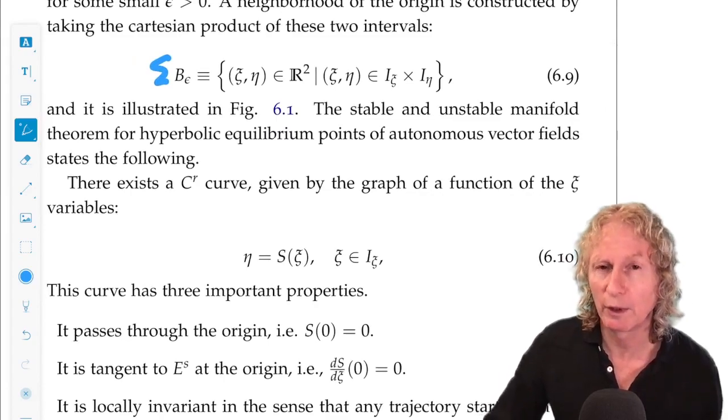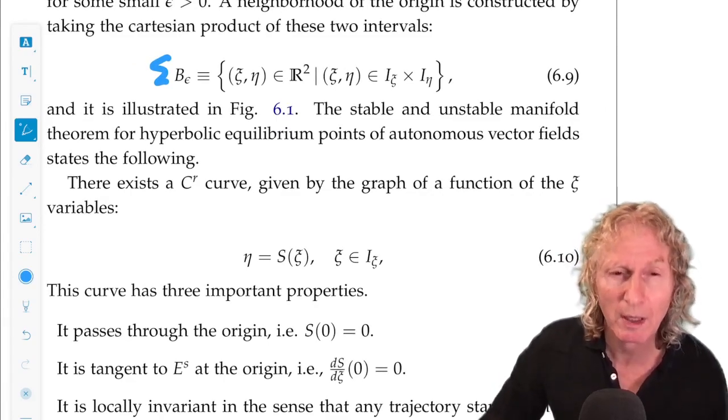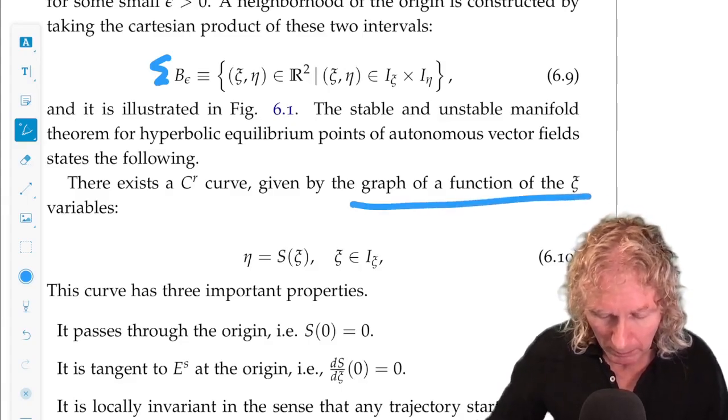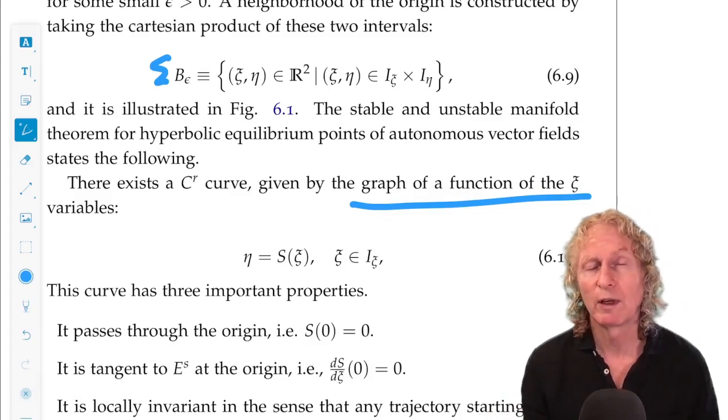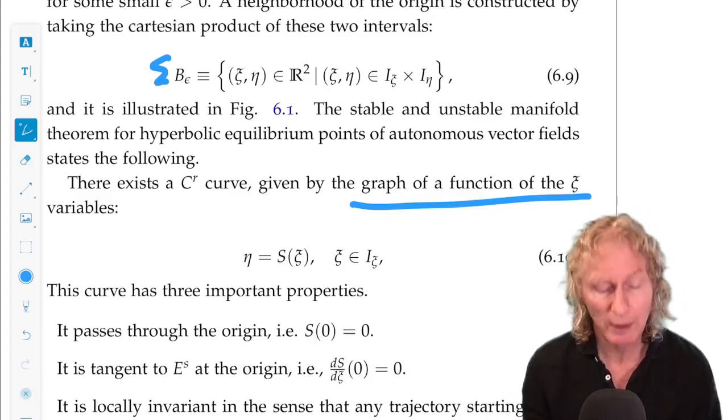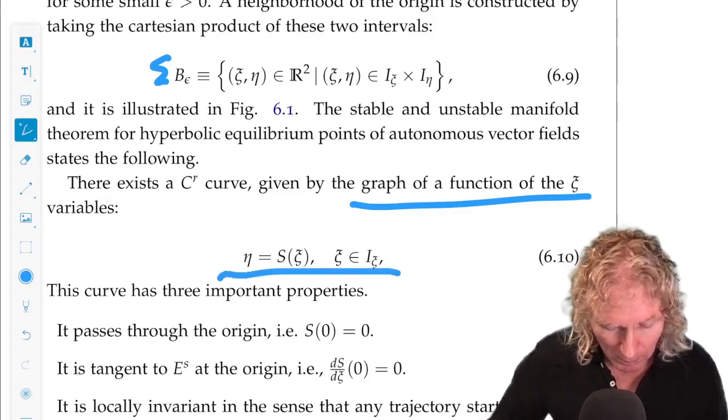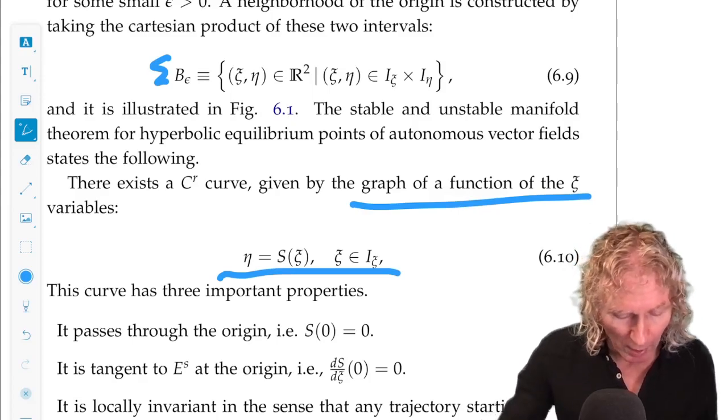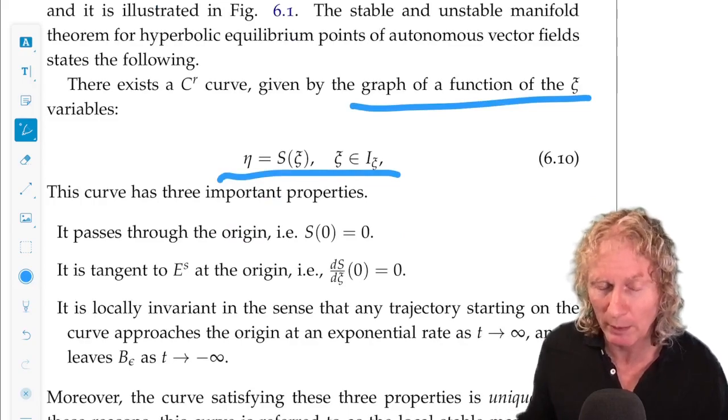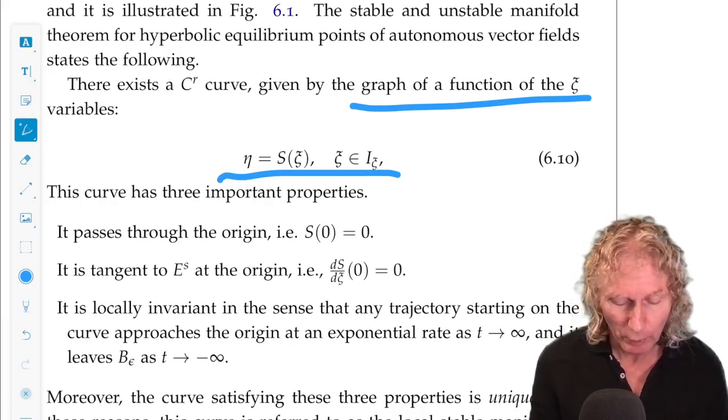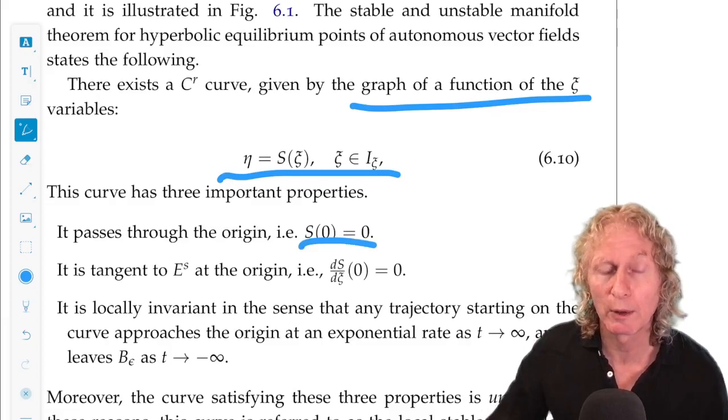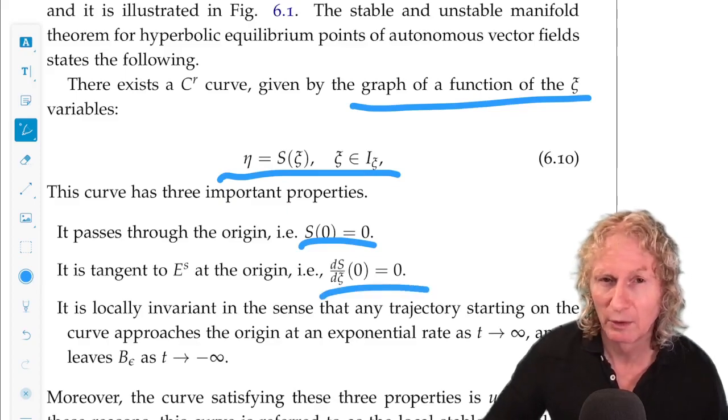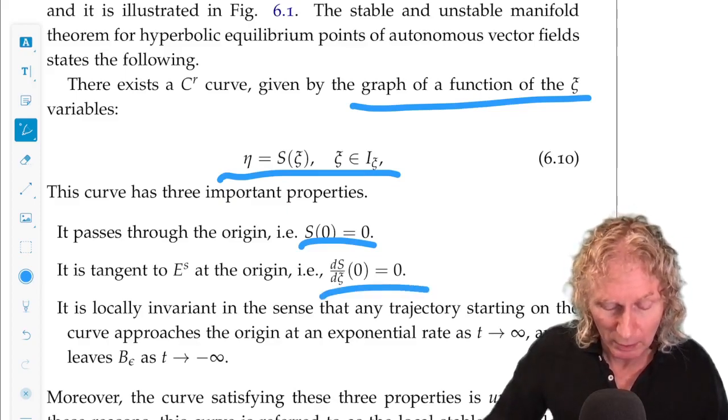All right, so there exists a C^r curve. C^r is important because that's the same degree of differentiability as the vector field. It's the graph of a function of the ξ variable, a graph over the stable subspace, η = S(ξ). So, it has three properties, very important. It passes through the origin, so S(0) = 0. It's tangent to the stable subspace at the origin. So, its derivative at the origin vanishes.